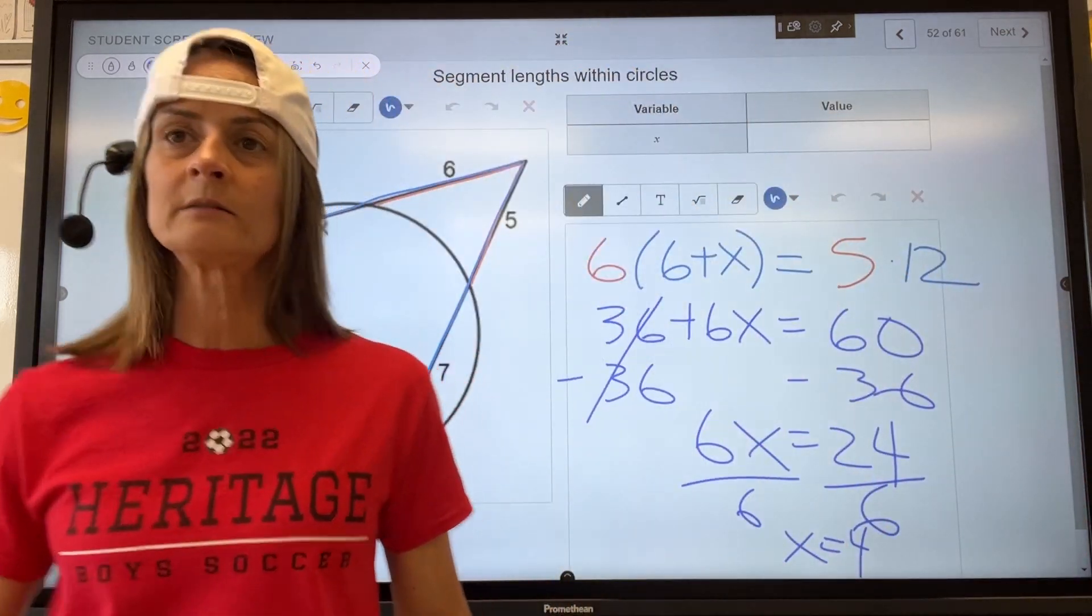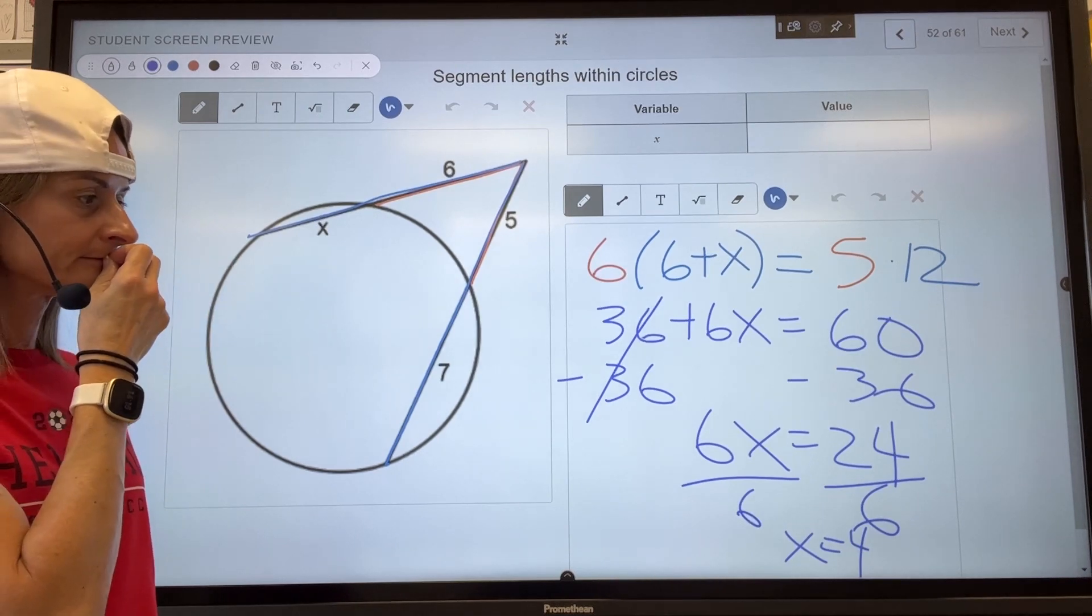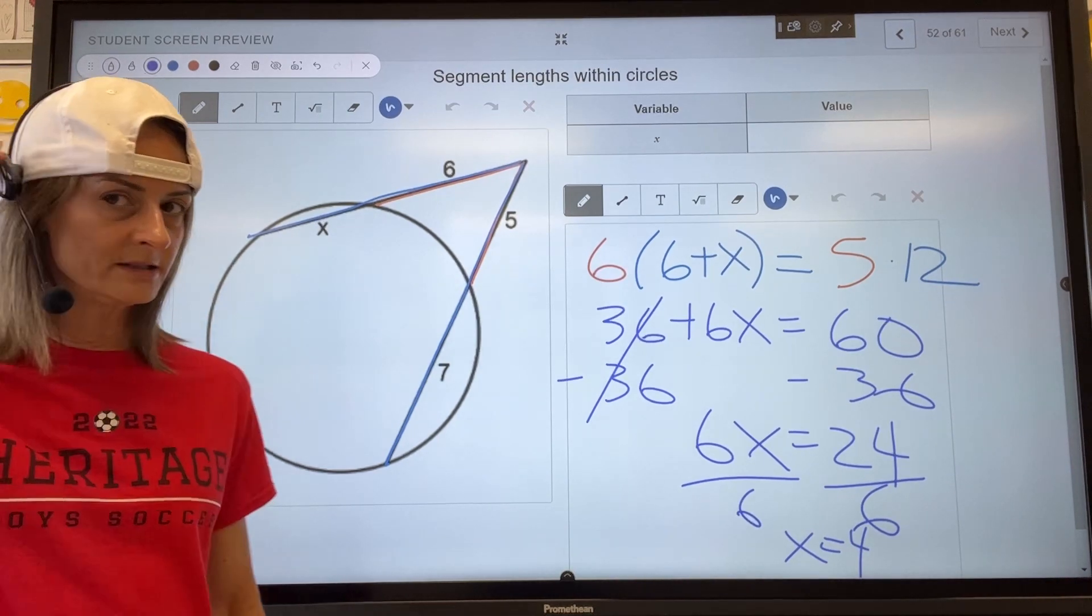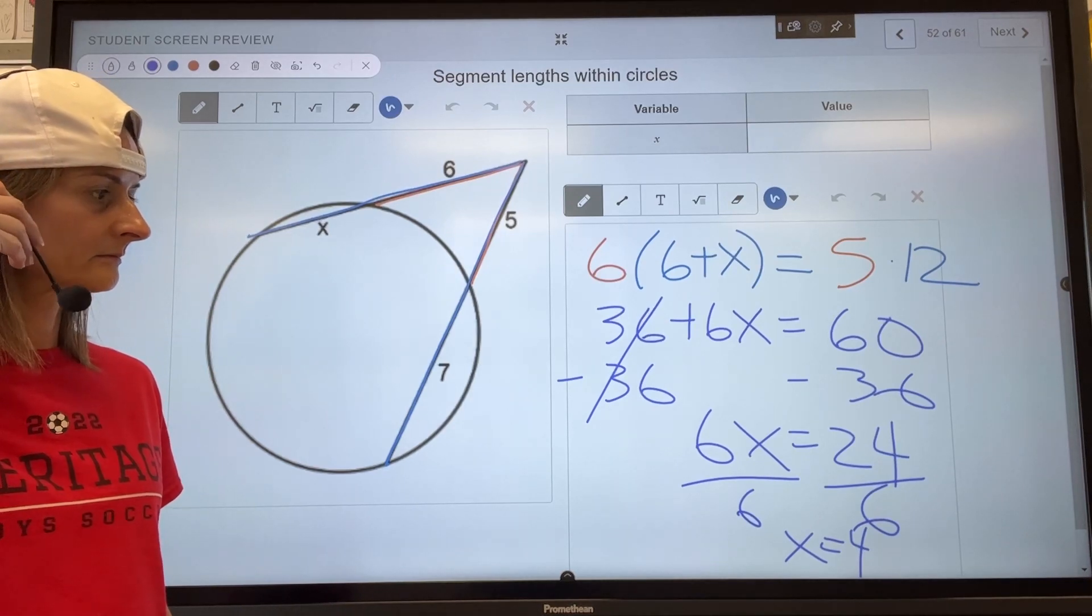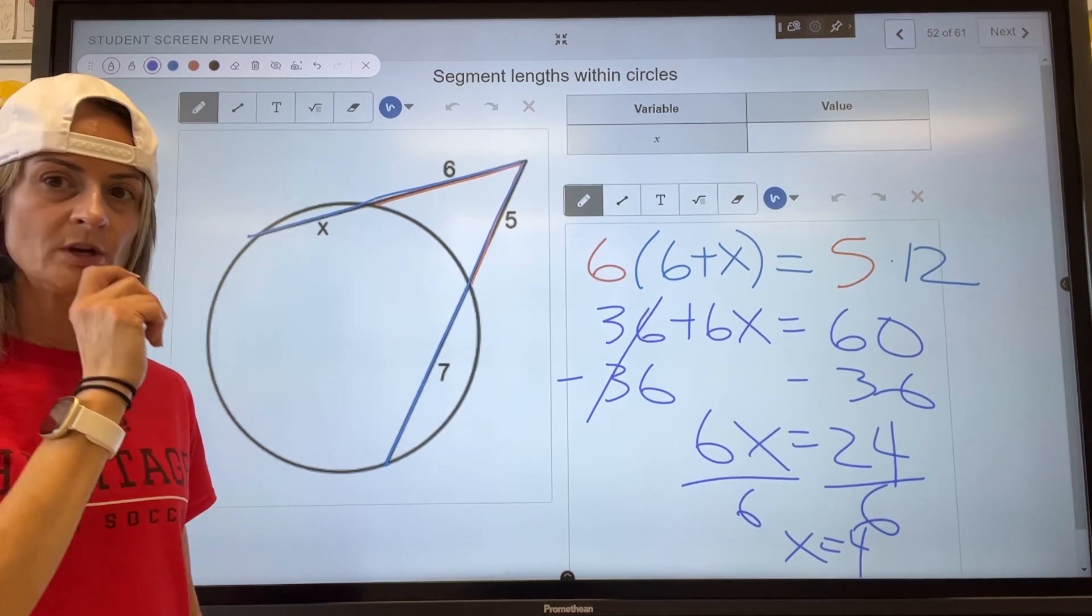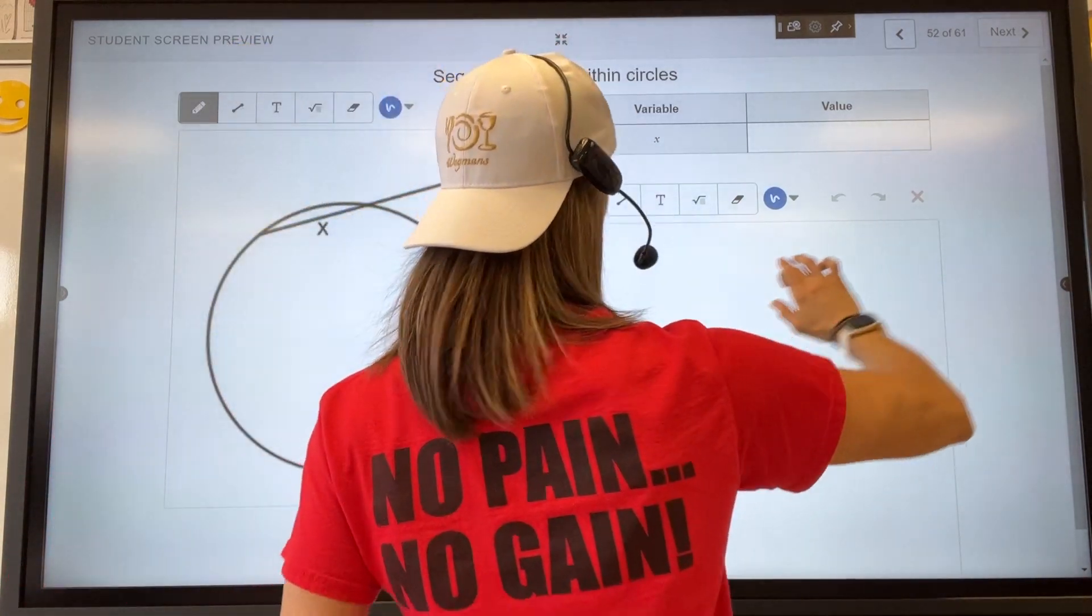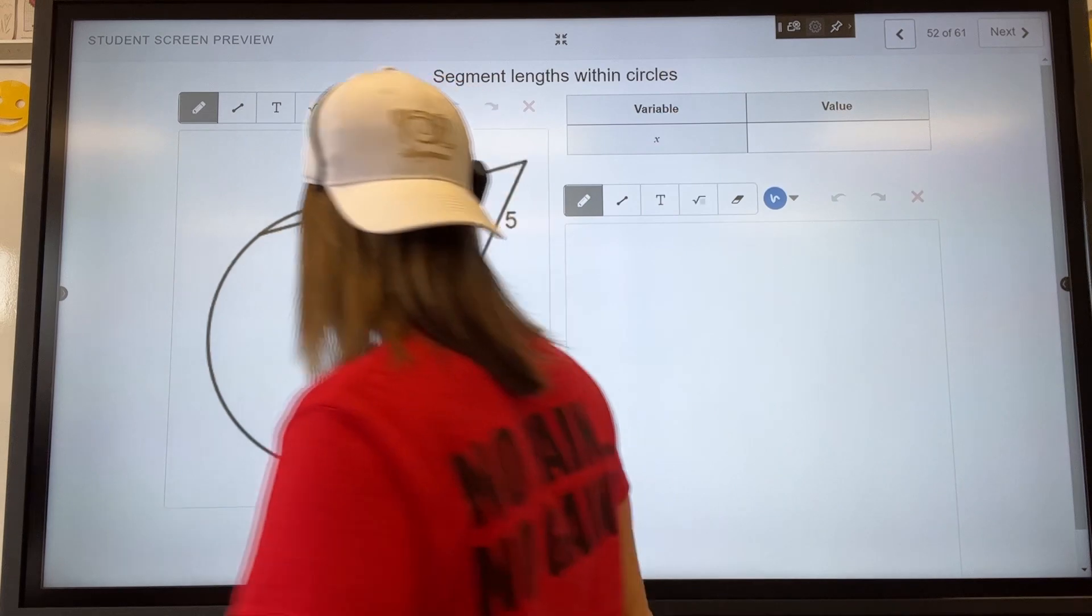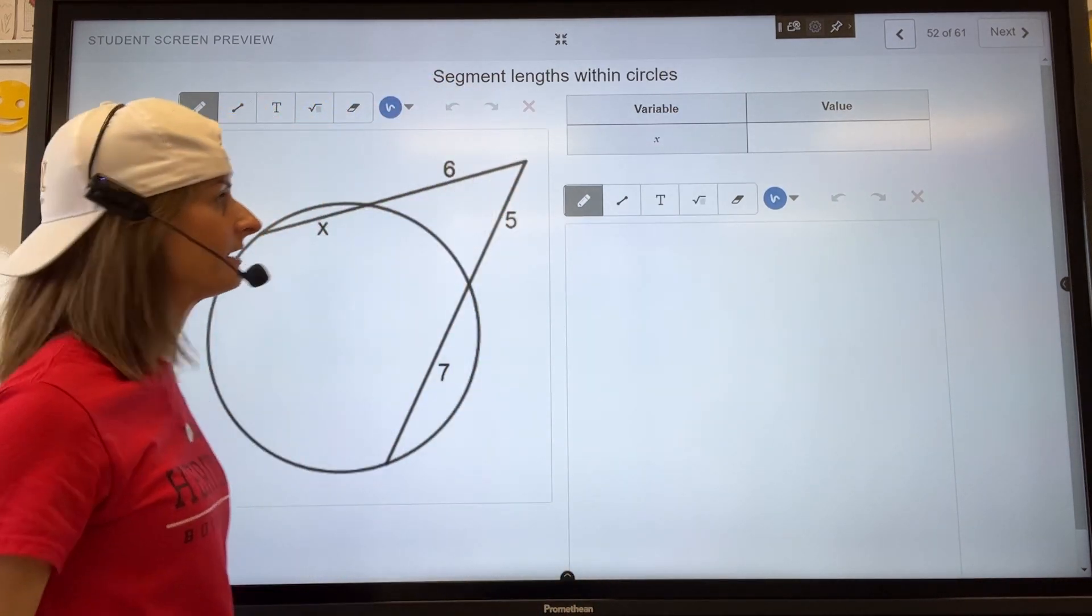Anyone still writing? And you get it quiet today. Good? These are the ones people have trouble with. A common mistake for this kind of problem is to do 6 times x equals 5 times 7. I see that every year.